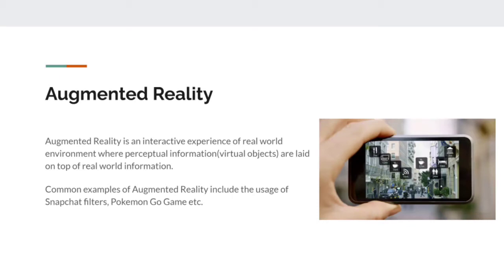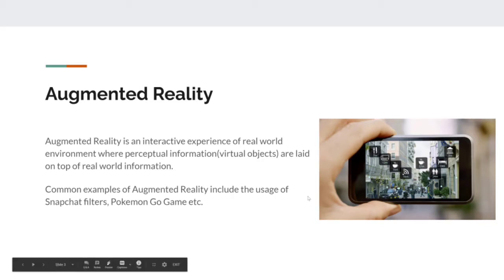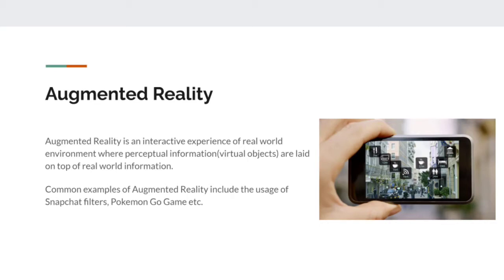Augmented reality is an interactive experience of our real-world objects — the objects we see with our naked eyes, every fellow being and object around us. We would also be seeing perceptual information: virtual objects which cannot be seen with naked eyes but are laid on top of the real-world objects using technology. For example, Snapchat or Instagram filters: your face in the camera is the real-world object, and the filters laid on top are the augmented perceptual information.